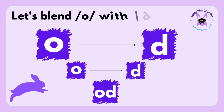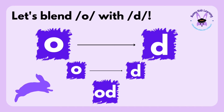And now, the letter O and the letter D. The sound of the letter O is O. The sound of the letter D is D. Drag the O longer: odd. Shorter: odd. Together: odd, odd.